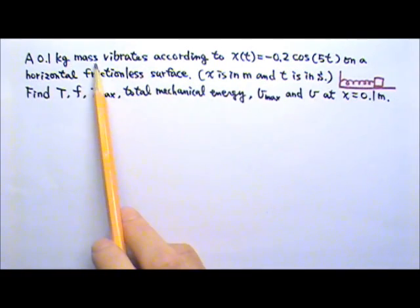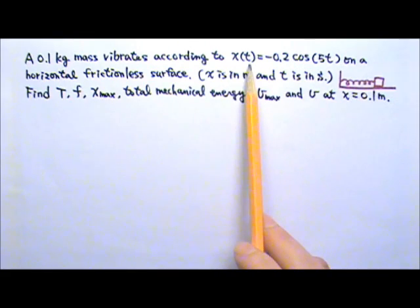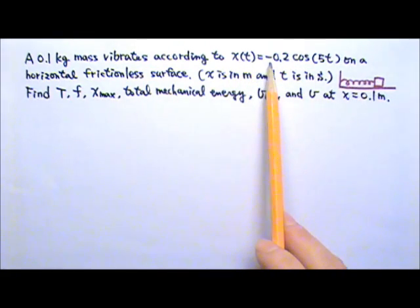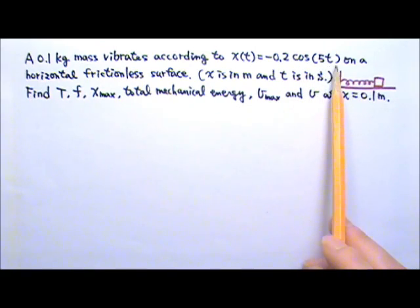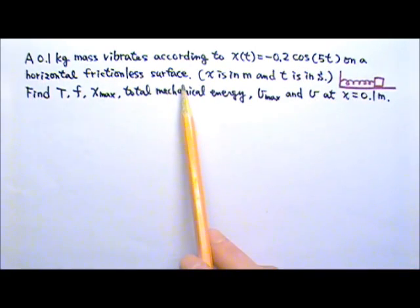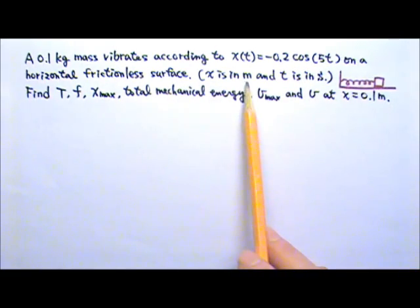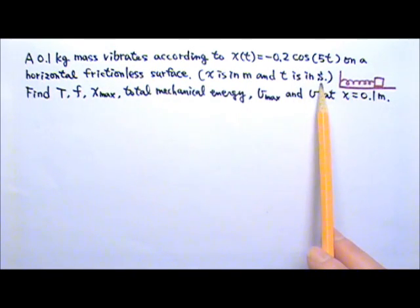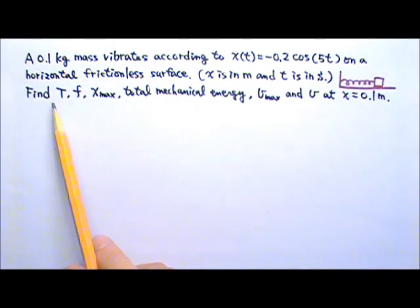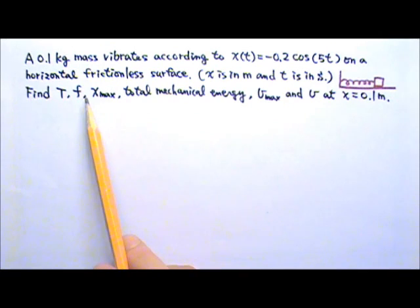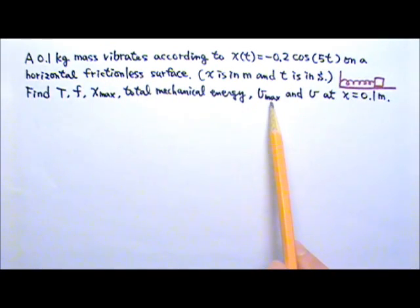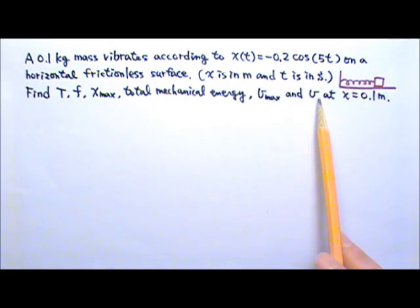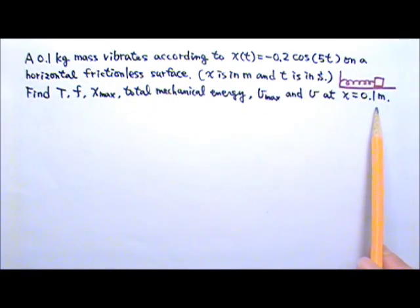A 0.1 kg mass vibrates according to the position as a function of time equals negative 0.2 cosine 5t on a horizontal frictionless surface, where x is in meters and t is in seconds. Find the period, frequency, amplitude, total mechanical energy, maximum speed, and the speed at x equals 0.1 meters.